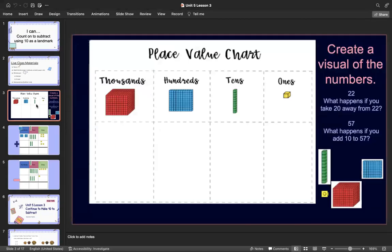We're jumping to our place value chart today. Our number is 22. What happens if you take 20 away from 22? Pause and work with your learning coach.